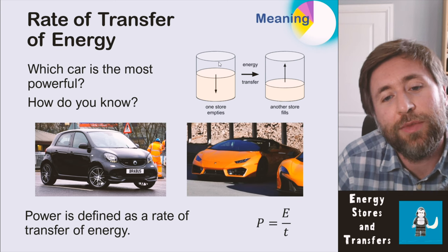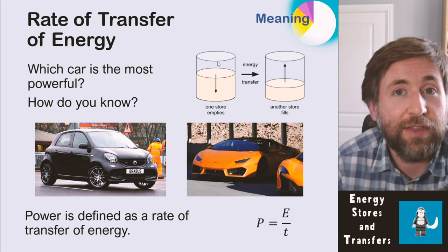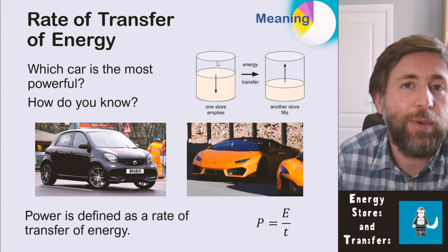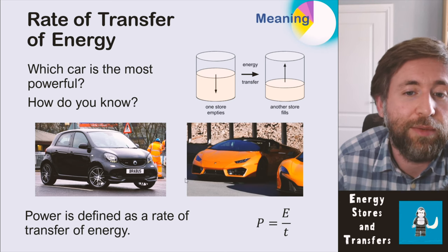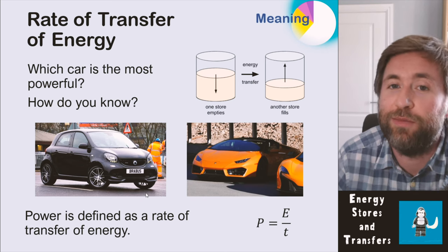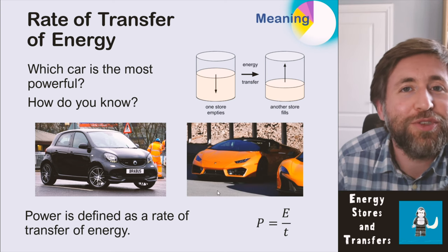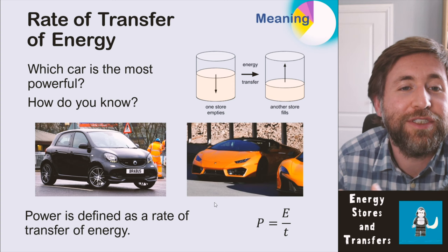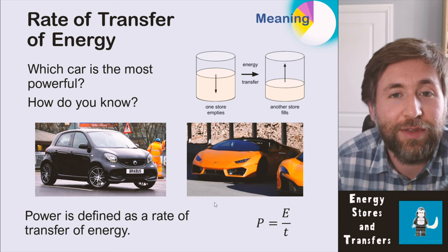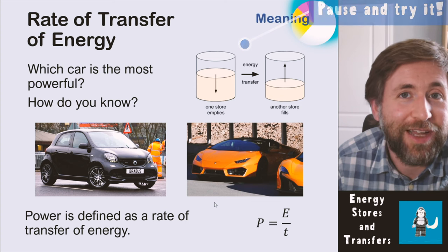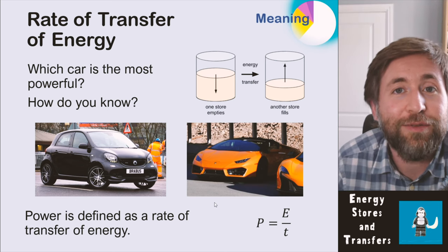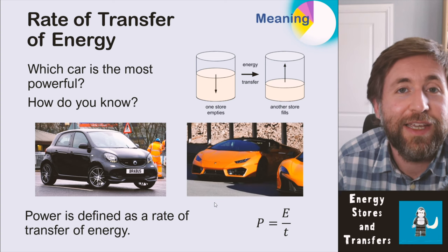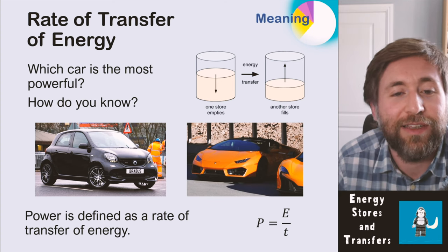Rate of transfer of energy is something we'll do more of later, and it's important to use the term 'power' correctly. Out of a smart car and a Lamborghini, which has the highest power? The Lambo is more powerful because it transfers more energy from the chemical store into the kinetic store at a higher rate — it increases its kinetic store much more rapidly than the smart car.